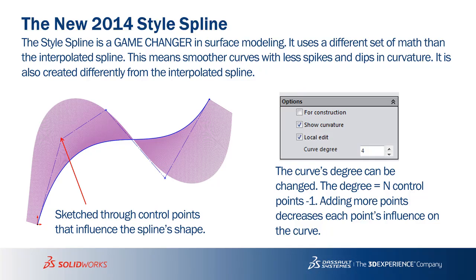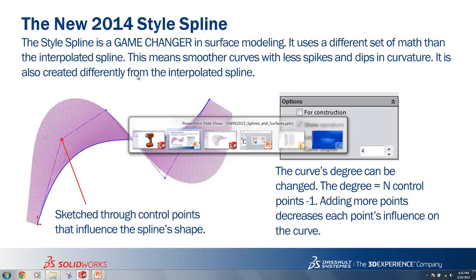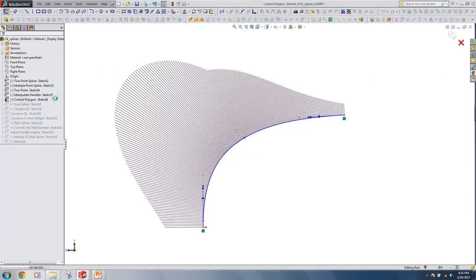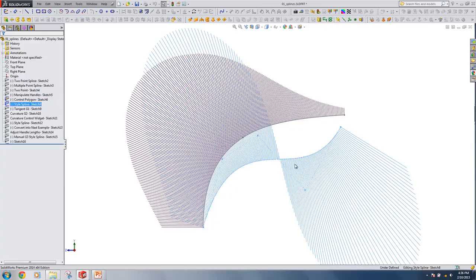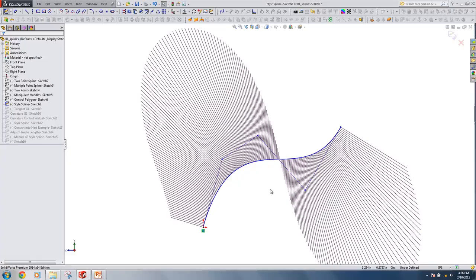The new style spline in 2014 is a game changer, especially when it comes to surface modeling. The style spline works similarly to the control polygon, but instead of little gray points we can't add dimensions to, I can actually constrain and control these construction lines. The new style spline is much smoother than the existing interpolated spline — it doesn't get those spikes or divots, and uses a new set of math. For those of you familiar with Rhino or Alias, the style spline is going to make a lot of sense — it works the same way as the curves in those programs.